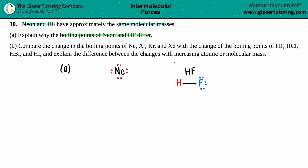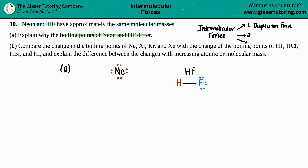From here we can identify the types of intermolecular forces for HF and neon. There are three basic types of intermolecular forces, and they get more specific as you go down the list: number one is dispersion forces (also called van der Waals or London forces); number two is dipole-dipole attraction; and number three, the most specific, is hydrogen bonding.